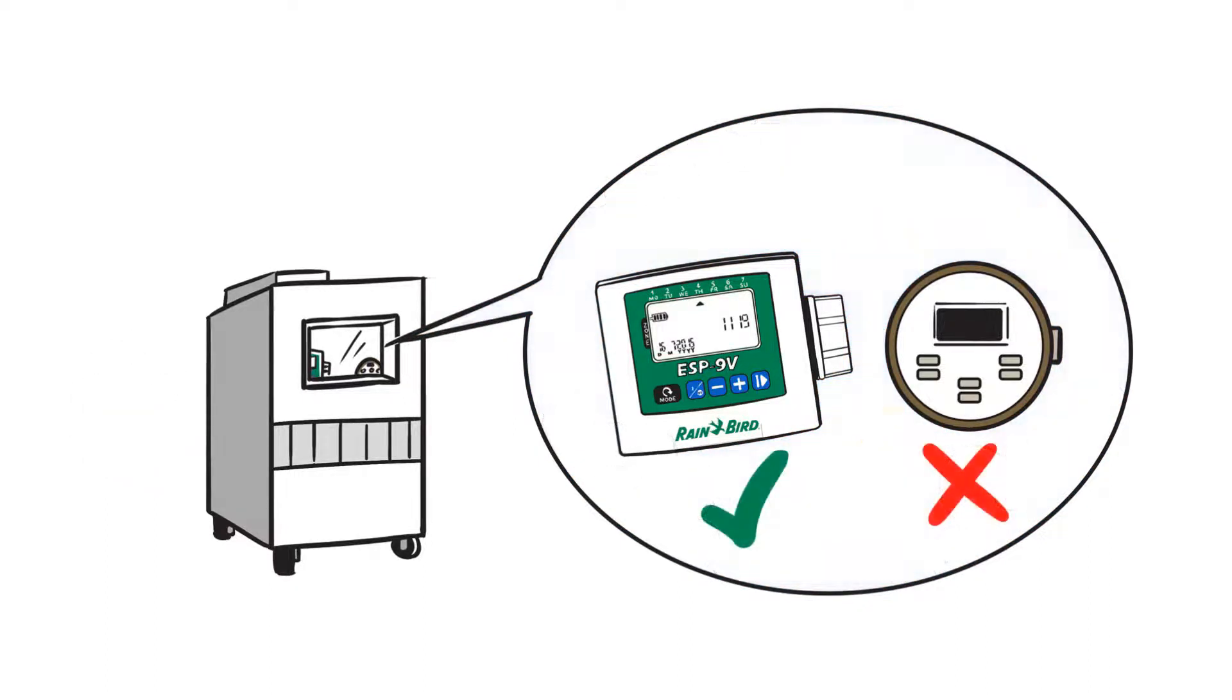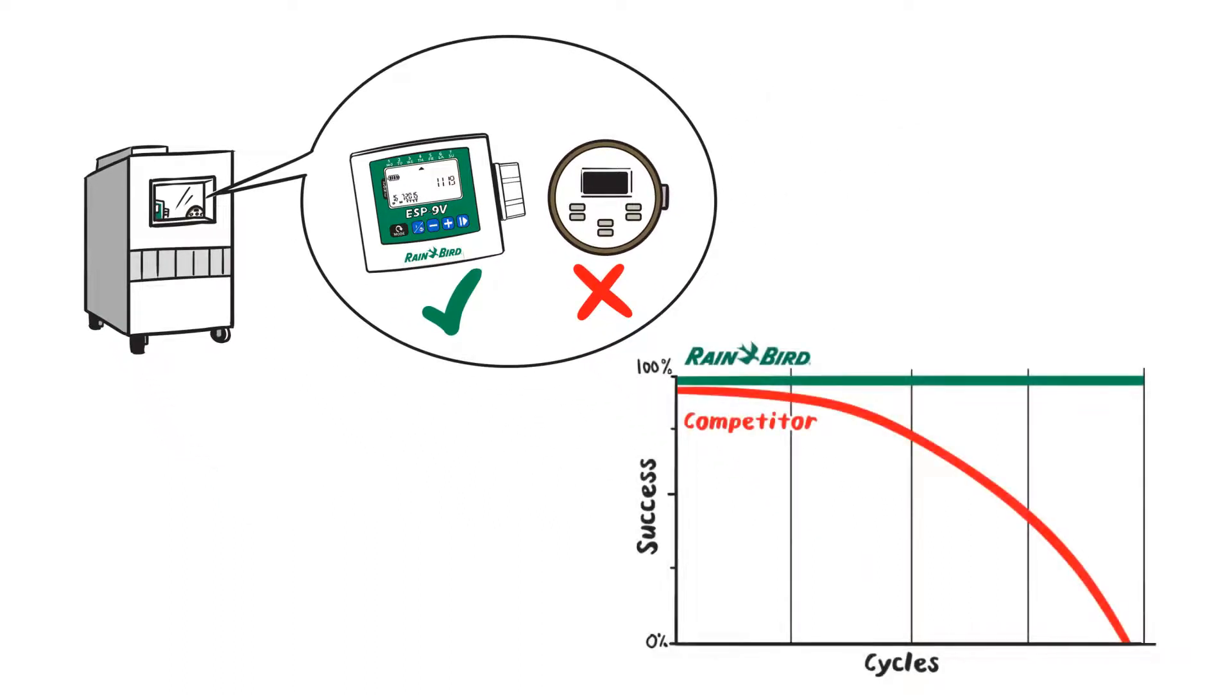The competition stops working partway through the test, but the Rainbird ESP9V doesn't have a single failure.